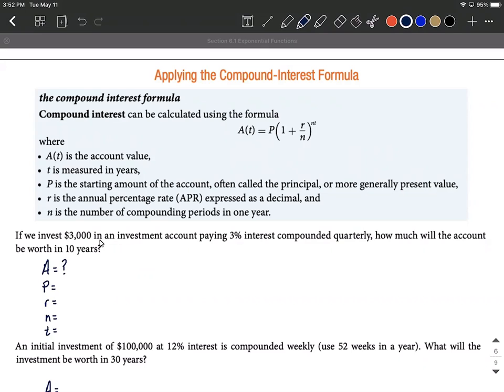We do know we're going to invest three thousand dollars, so that's the principal or the starting amount. Our rate is 3% interest but we're going to go two decimal places over to the left, so 0.03 is what we plug into the formula.